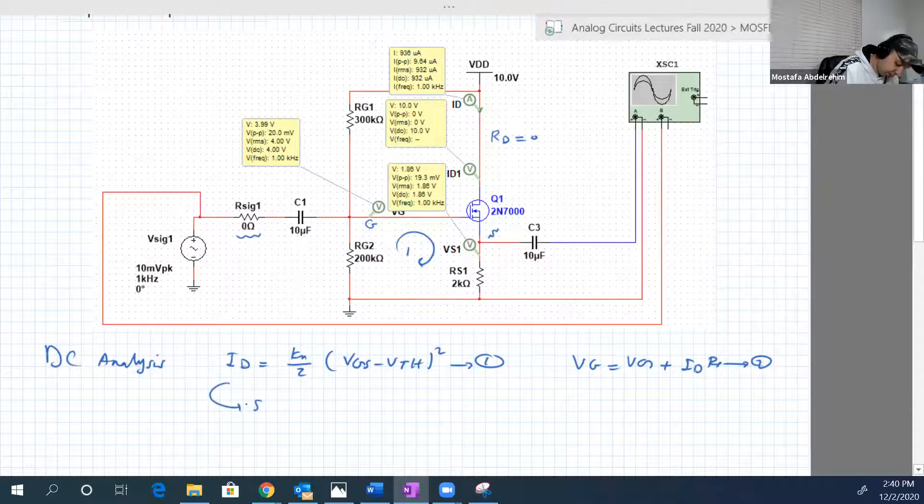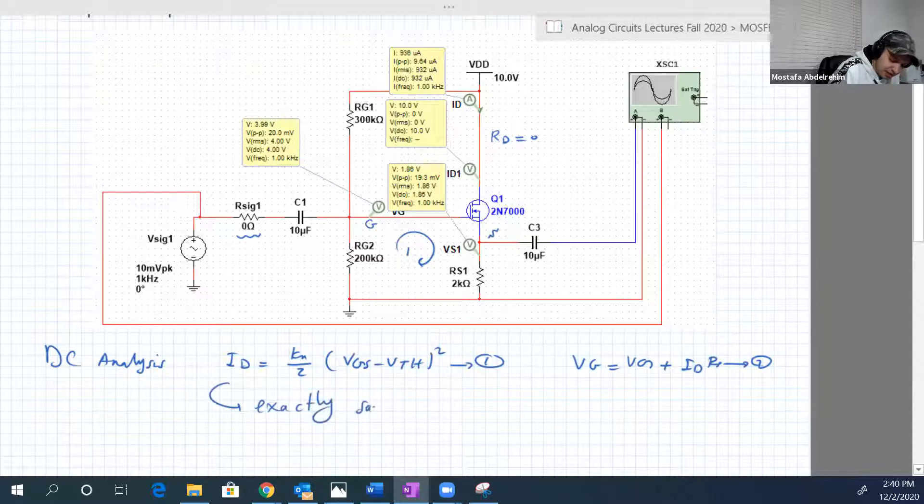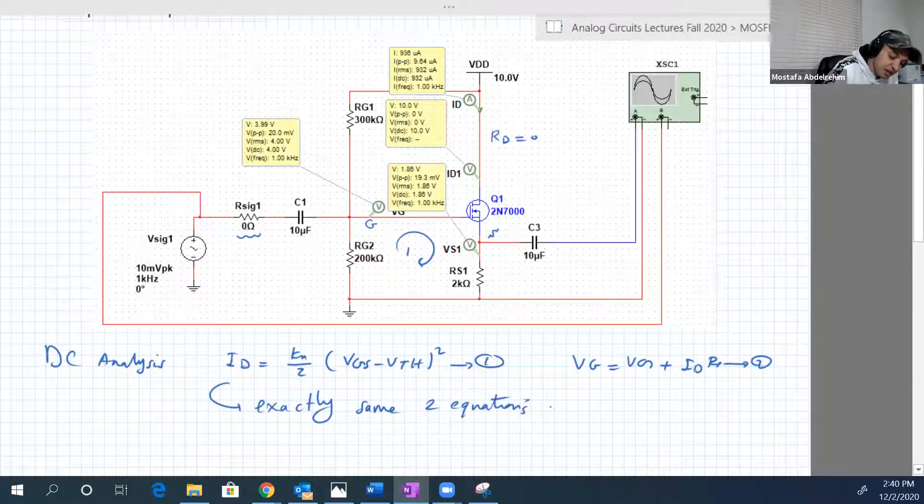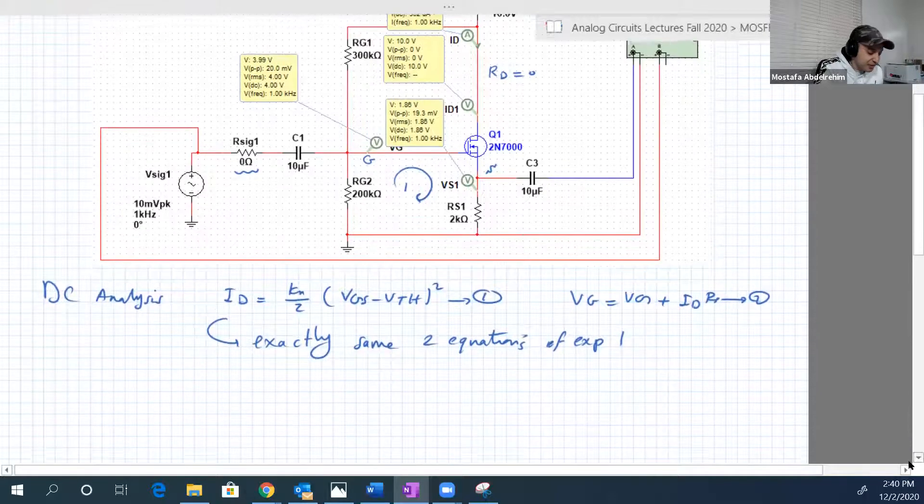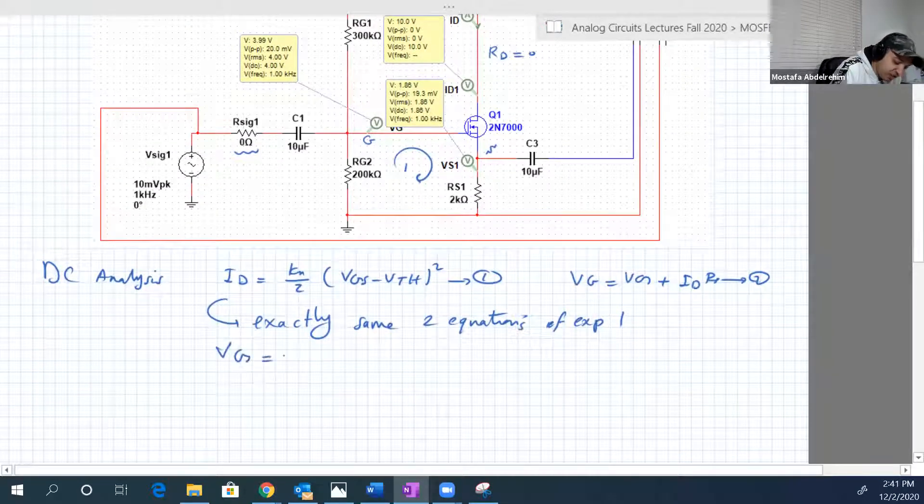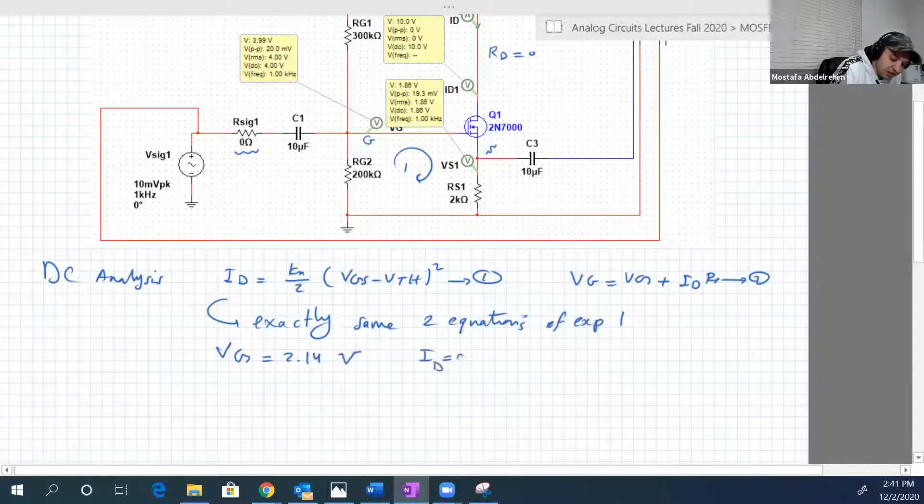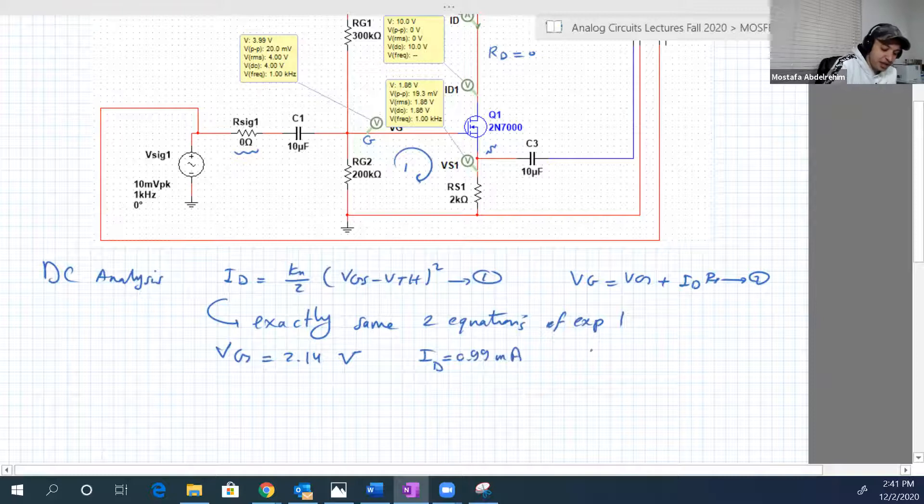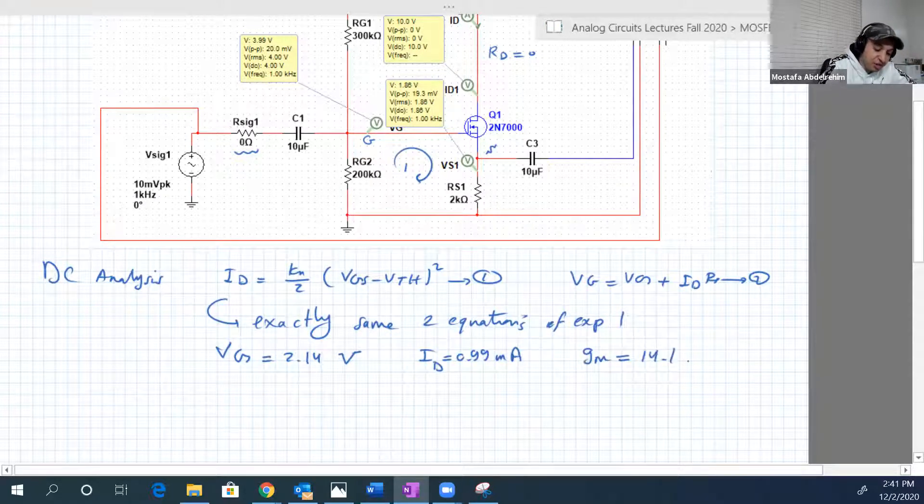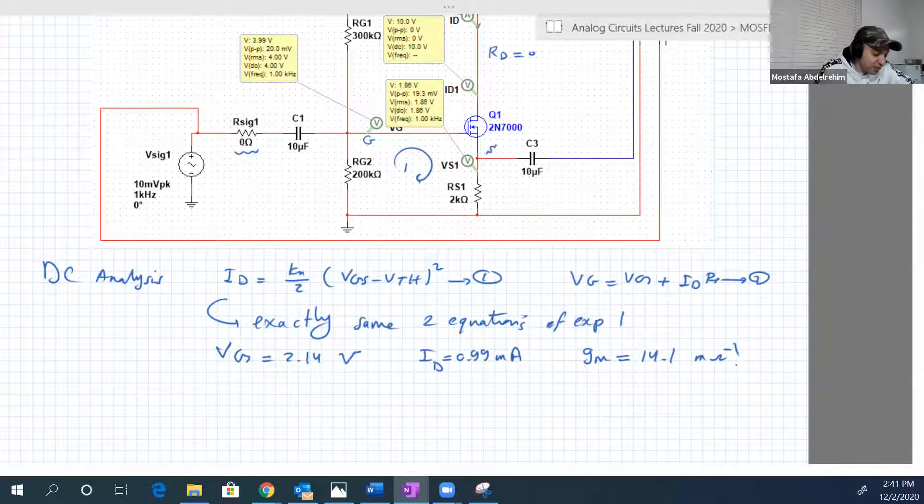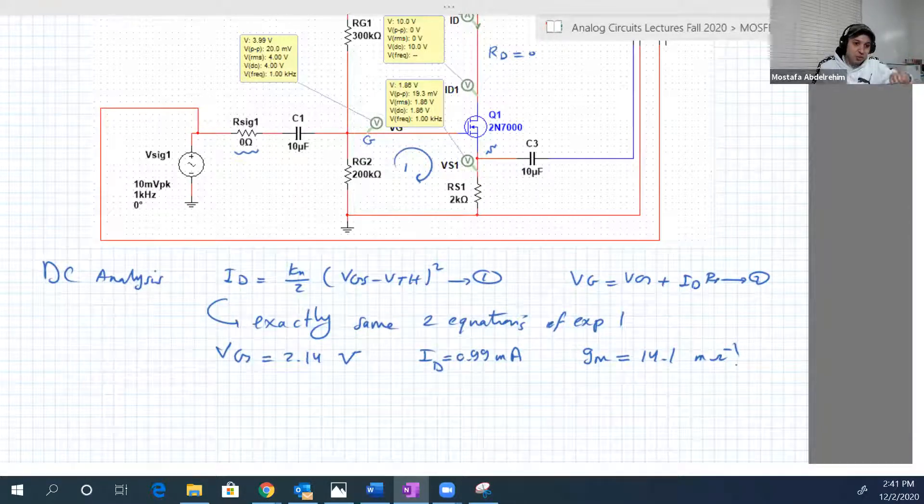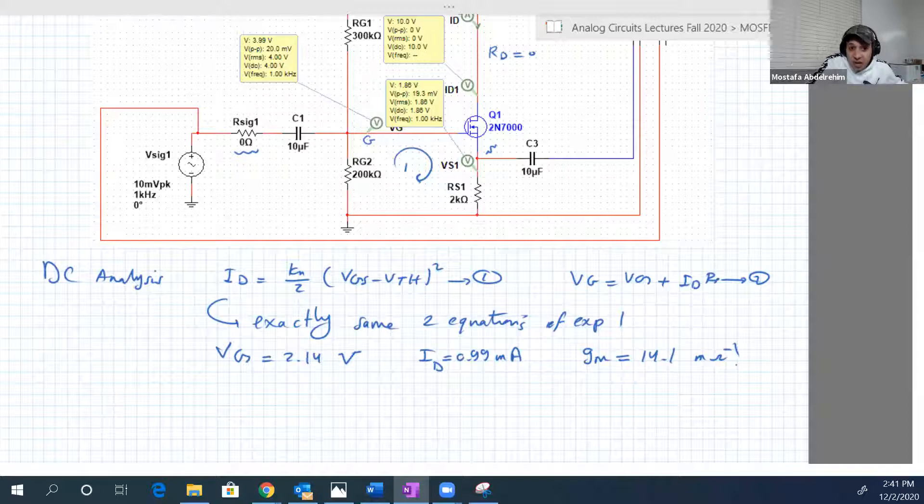Exactly same two equations that we solved together of experiment one, so they should lead to the same solution. And the solution is that VGS equal to 2.14 volt, ID is 0.99 milliampere, and GM is 14.1 milliampere. And why there is no variation? Because we didn't change something in loop 1, which has RS and RG2, and we're still working in saturation since this is an amplifier.